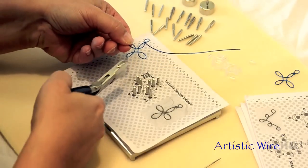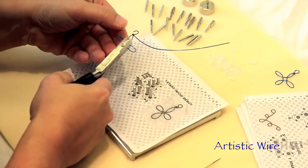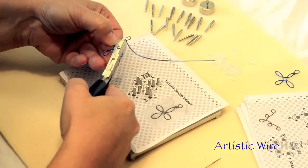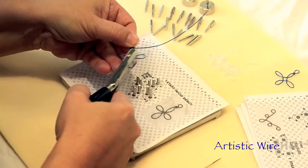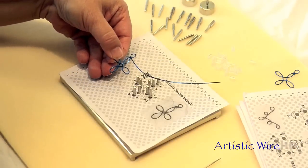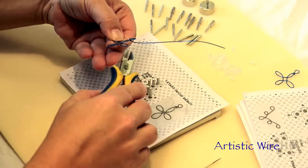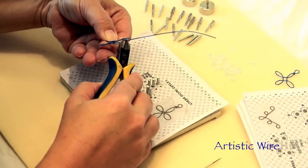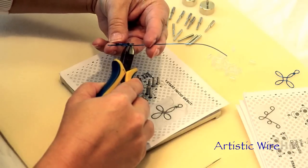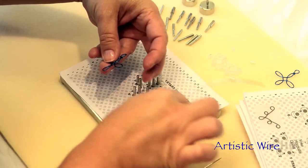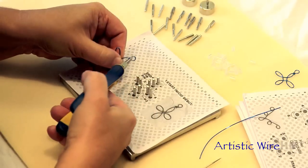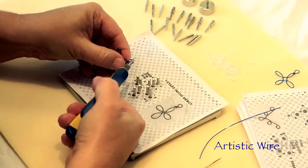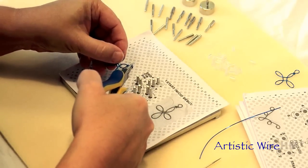Then I'm going to bring in my nylon jaws and this is where it will flatten the wire and it will also harden the wire. Then I'm going to take my wire cutters and holding both ends of the wire, because I do not want them to fly, I will trim that.